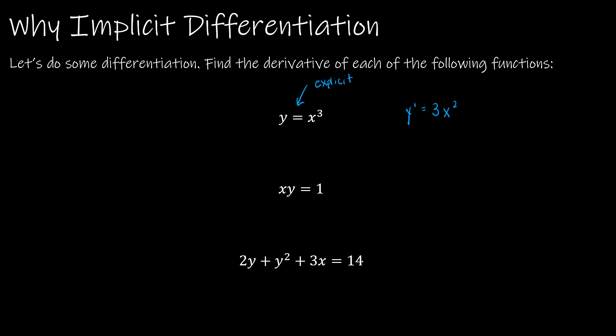For the second function, while it's not currently written in an explicit way, I can rewrite it as y equals 1 divided by x, or x to the negative 1. So y prime would be negative x to the negative 2, or negative 1 over x squared. In my third equation, I have more than one y, and it wouldn't be easy to isolate it explicitly. So when we have a situation like this, we can use implicit differentiation, which has a lot to do with the chain rule.